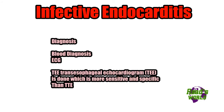The most accurate diagnosis for infective endocarditis is blood culture, because it guides antibiotic therapy. ECG can also be used, as it detects the progression of vegetations and is helpful in checking wall damage and abscess formation. The most specific and sensitive imaging modality is transesophageal echocardiogram, also known as TEE.